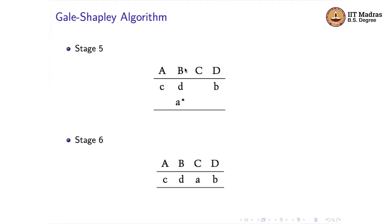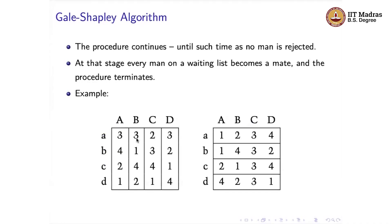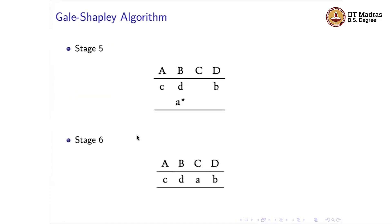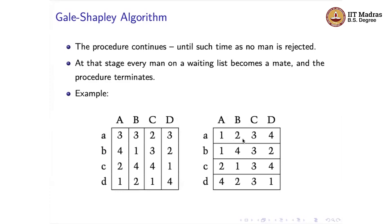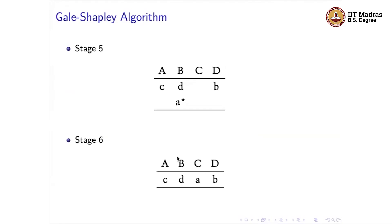Mr. A is now rejected and proposes to Miss B, his second choice. Miss B compares Mr. D and Mr. A and ranks Mr. D above Mr. A, so she rejects Mr. A's proposal. Mr. A then makes a third proposal to Miss C. Now every woman has exactly one proposal, there are no more rejections, and the algorithm terminates. The final matching: Miss A with Mr. C, Miss B with Mr. D, Miss C with Mr. A, and Miss D with Mr. B.